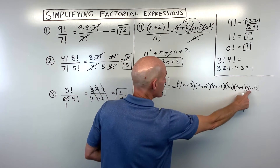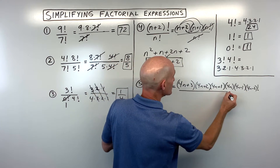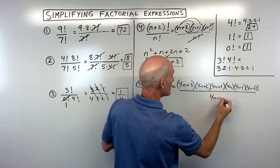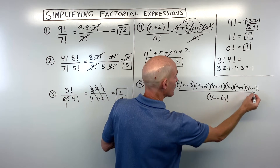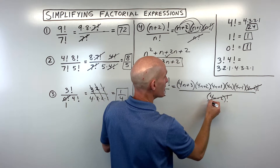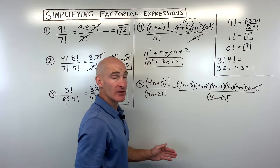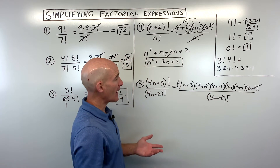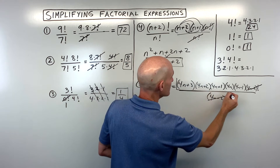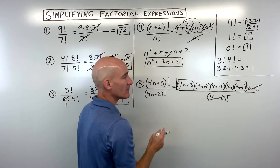I stopped at 4n minus two because that matches the denominator's 4n minus two factorial, and these cancel one another out. The remaining terms are our final result: 4n plus three, times 4n plus two, times 4n plus one, times 4n, times 4n minus one. You can multiply that out or leave it as is.